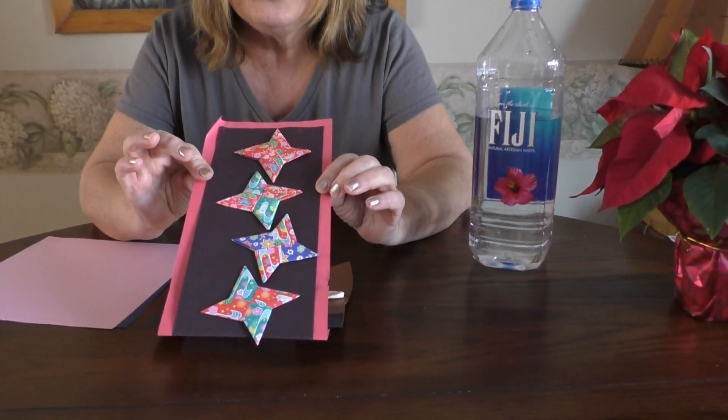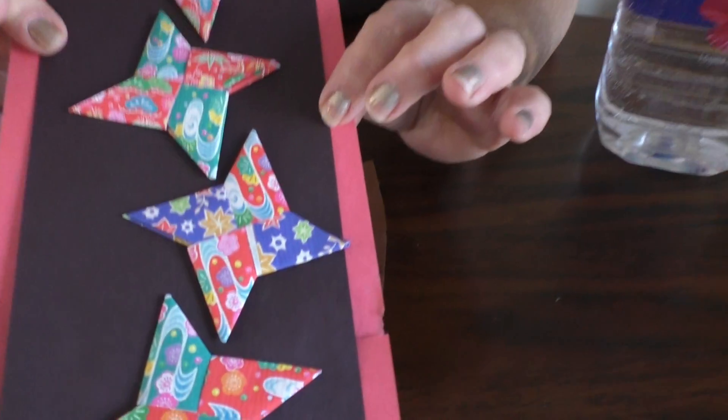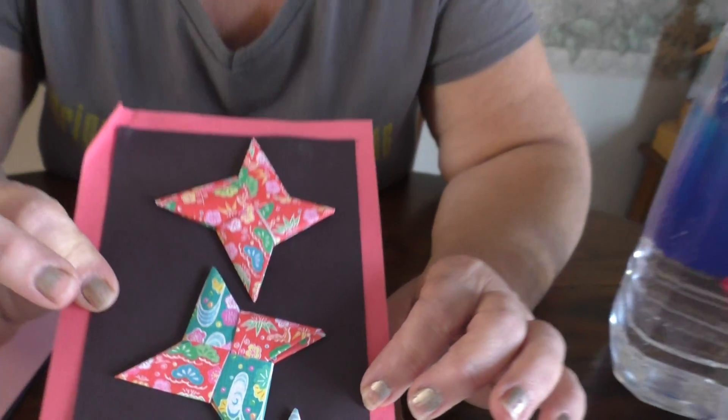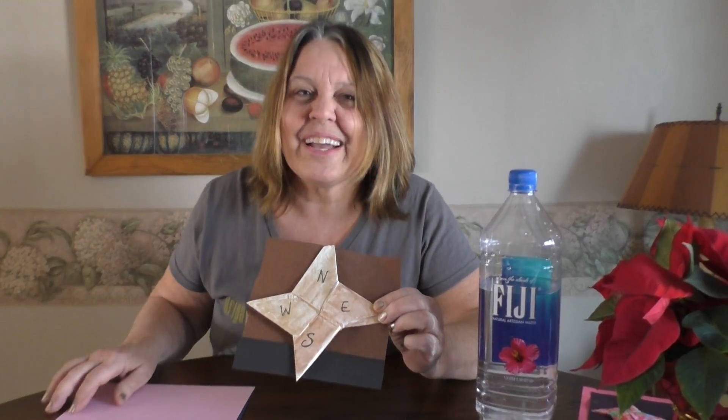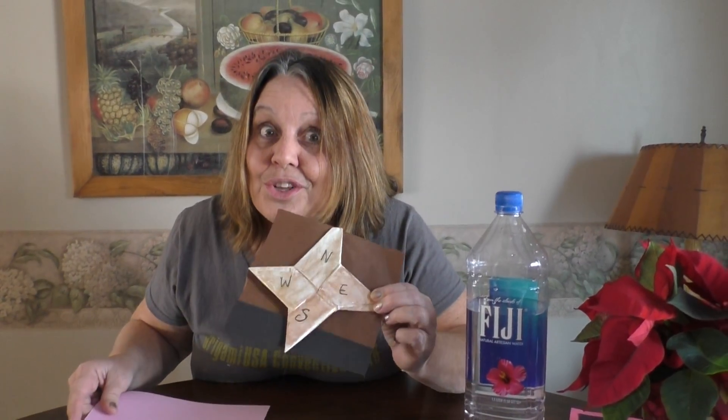Today we're going to fold a ninja throwing star, but unfortunately we can't call it that in school. So we're going to make a compass rose instead - north, south, west, and east. We're not going to tell anyone it's called a ninja throwing star.